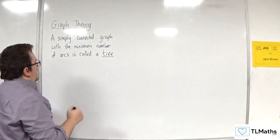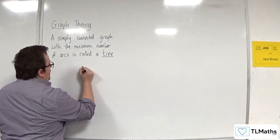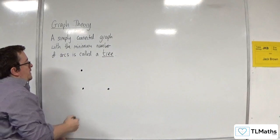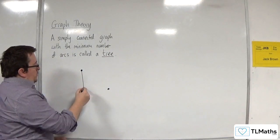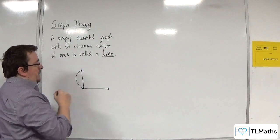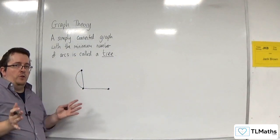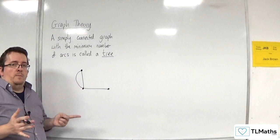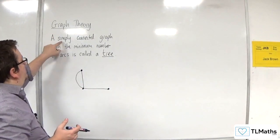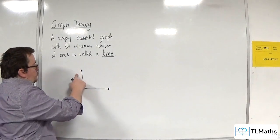Now essentially what that means is that if I've got three vertices here, then first of all I can't have something like that. So that's not a tree because it's got multiple edges. Because we've got these multiple edges, it's not simple. So let's remove that.